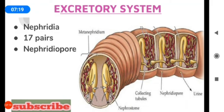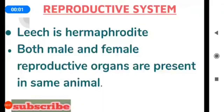Nephridia open through pores called nephridiopores from the 6th to 22nd segments. The next important functional system is the reproductive system. Mostly in higher organisms there are two different sexes — male and female. But the leech is a hermaphrodite, meaning both male and female reproductive organs are present in the same animal.